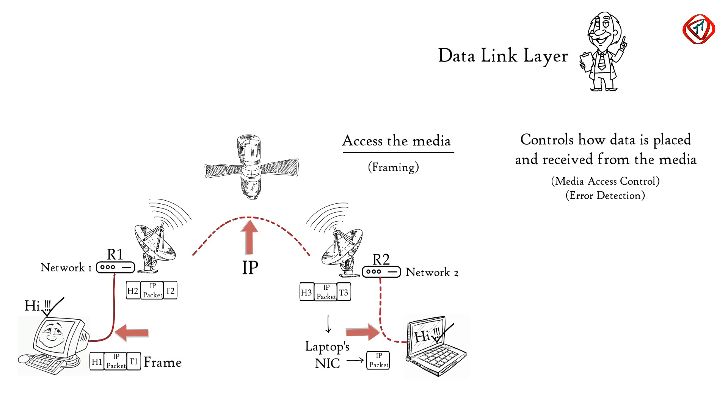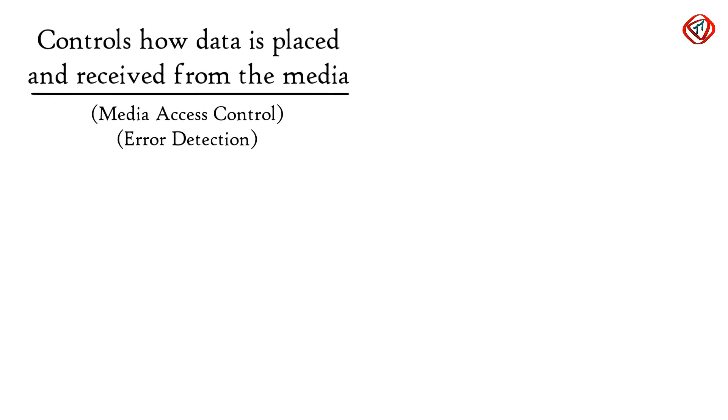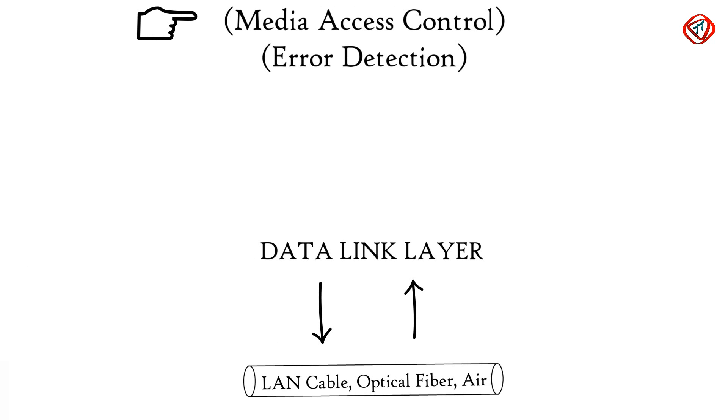Data link layer also controls how data is placed and received from the media. The technique used to get the frame on and off the media is called media access control.